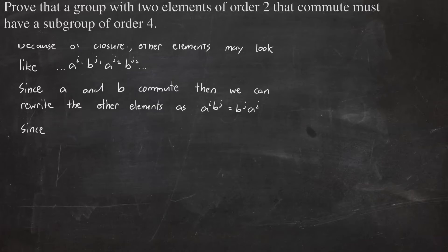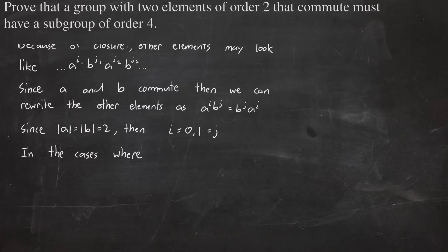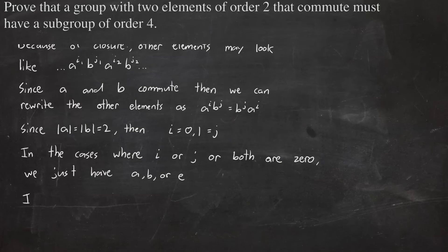Also, since a and b have order 2, we can rewrite where i is equal to 0 or 1 and j is 0 or 1. In the cases where i or j or both are 0, then we just have a, b, or e. So the only case we have left is if i and j are both 1, which means we'll have ab as our last element, which is the same as ba.